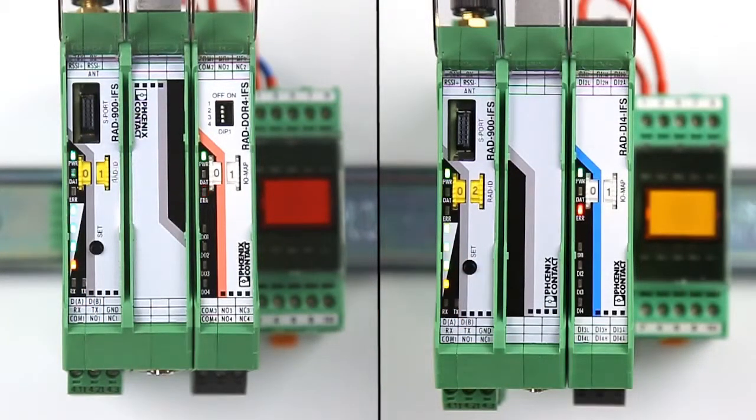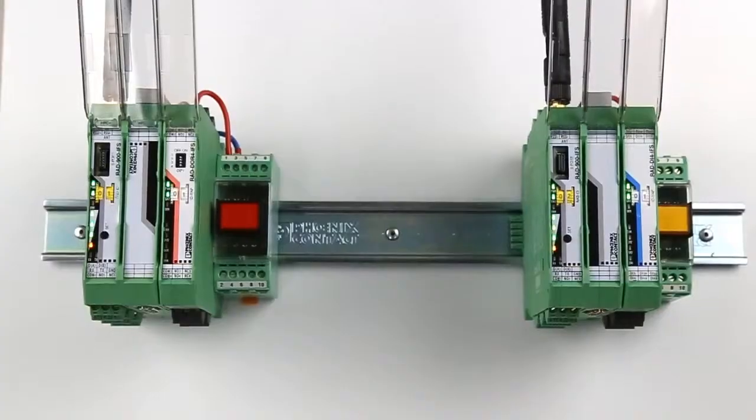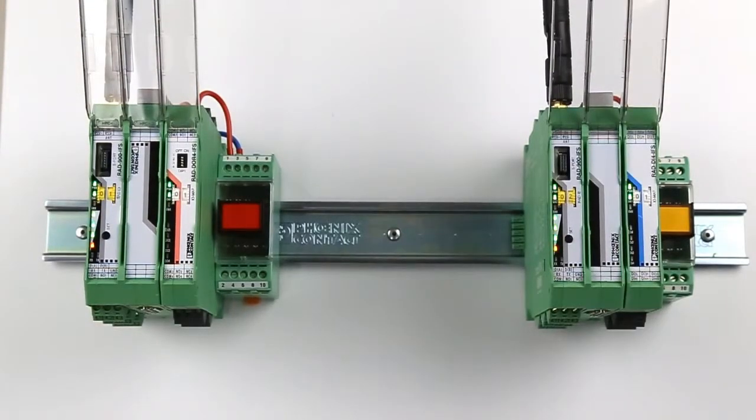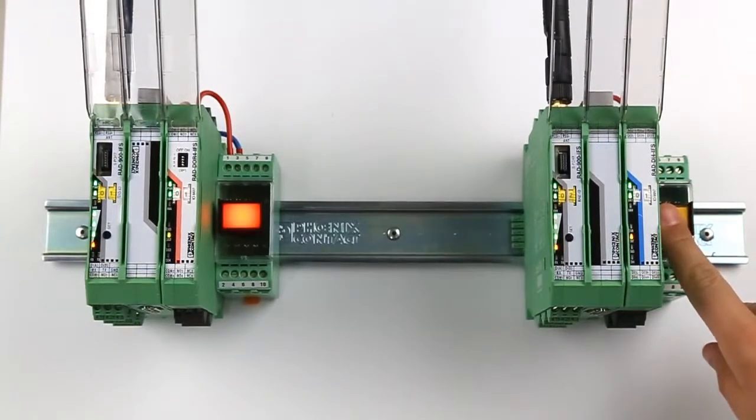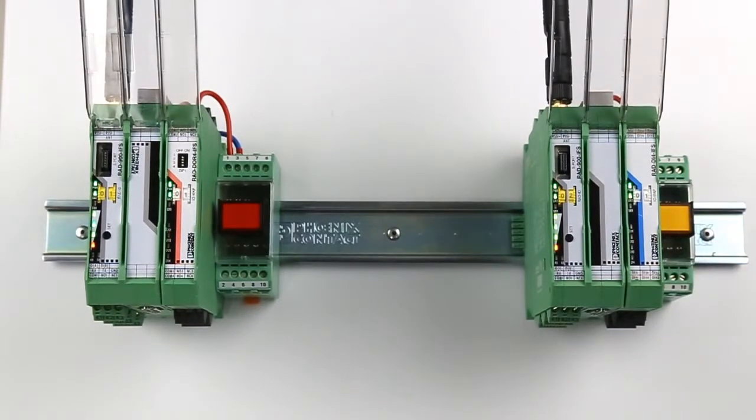Now, configuration is complete, I.O. modules are mapped, and we have quickly and easily configured a Radioline system without using software.